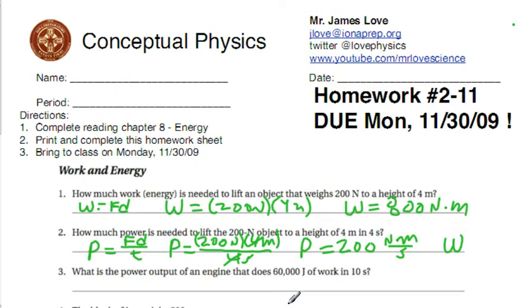Number three: what is the power output of an engine that does 60,000 joules of work in 10 seconds? Again, power is equal to work divided by time.